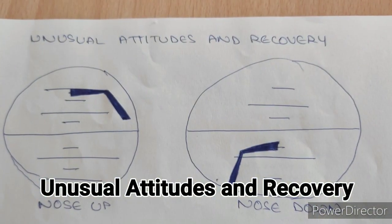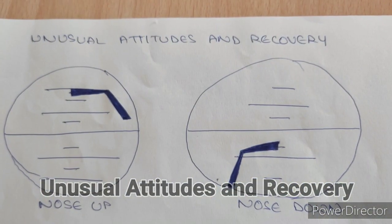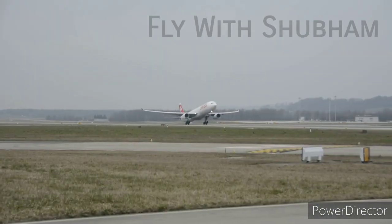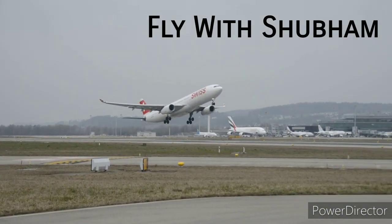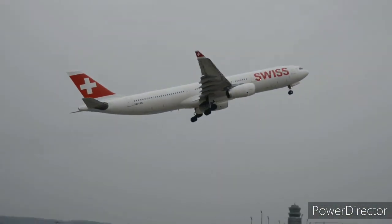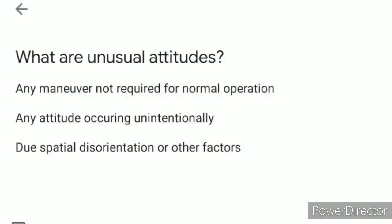Hey everyone, welcome back to Fly with Shubham. Today we will be talking about unusual attitudes and recovery. Unusual attitudes are basically any maneuvers which are not required for normal operation, or an attitude of the aircraft which occurs unintentionally, which may be due to spatial disorientation or other factors.